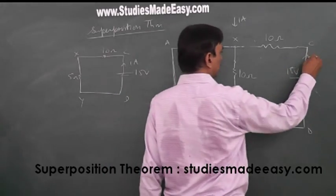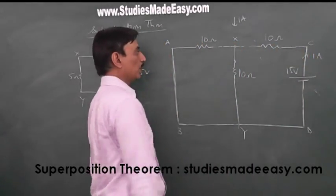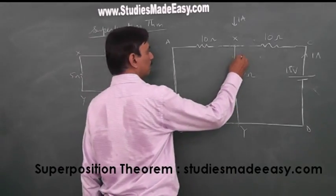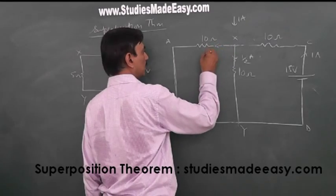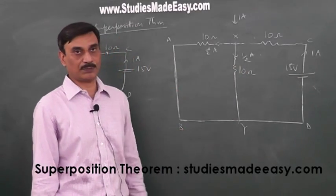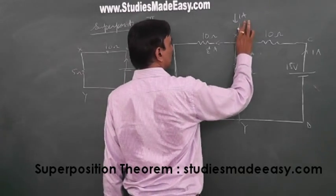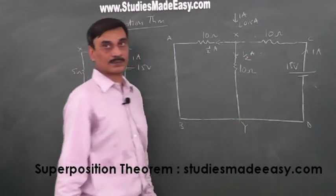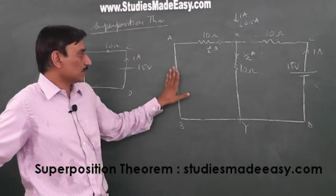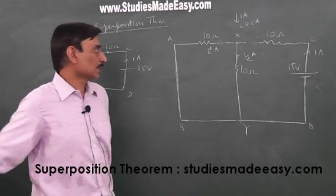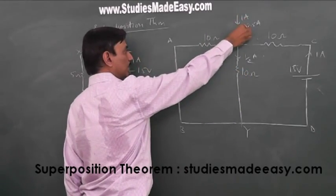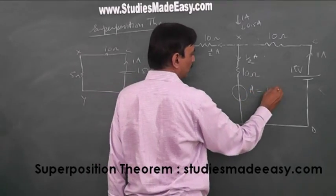So 1 ampere current flows out of the 15V battery. It has two ways to go — both paths have the same resistance. So it gets split: 0.5 ampere this way and 0.5 ampere the other way. So the contribution of current because of the 15V battery in arm XY is 0.5 ampere in the same direction as the contribution from the 30V battery.